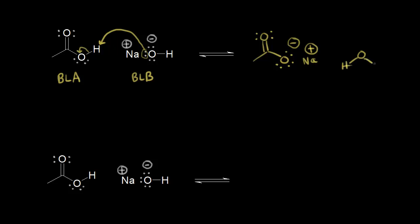So let me go ahead and draw water in here, and I'll put in my lone pairs of electrons. Let's follow our electrons along. The lone pair right here on the hydroxide anion picked up this proton. Let's say those two electrons in magenta are these two electrons, and this was the proton that they picked up. And then we also need to follow the electrons in blue — these electrons in blue come off onto the oxygen, giving it a negative one formal charge. So this is an acid-base reaction.